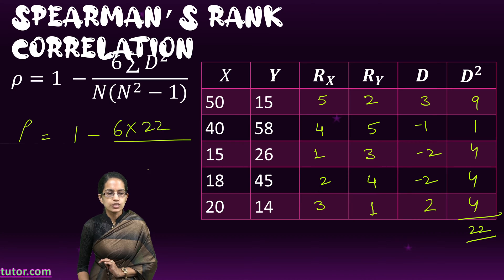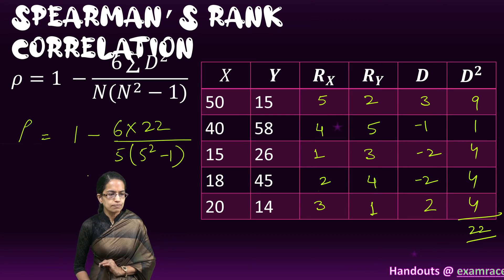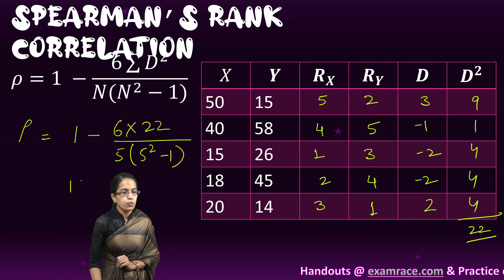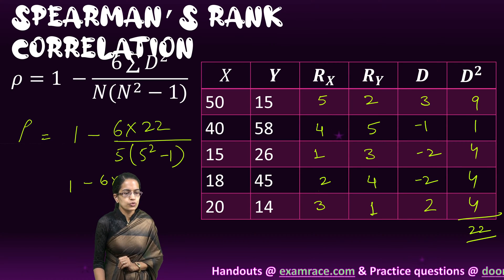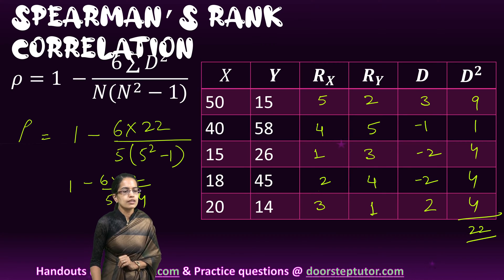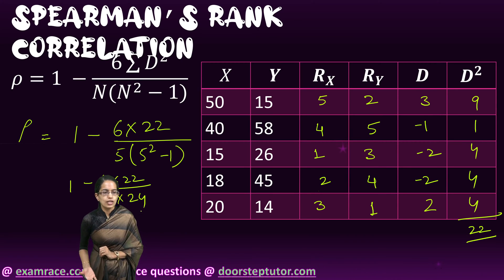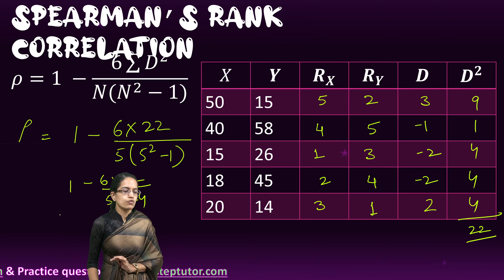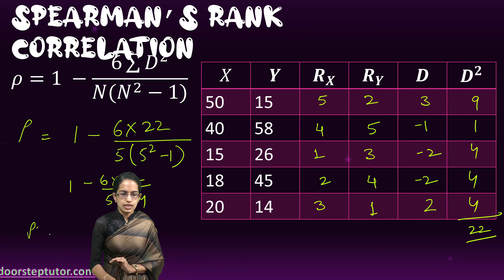How many number of pairs? 5. So 5 into 5 square minus 1. So I have 1 minus 6 into 22 divided by 5 into 24. And I solve this and I get the value for the rho, which is my correlation here.